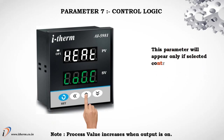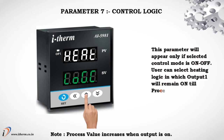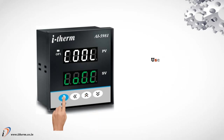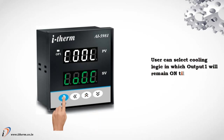Parameter 7: Control Logic. This parameter will appear only if the selected Control Mode is on-off. The user can select heating logic, in which output 1 will remain on while the process value is less than the set point, or cooling logic, in which output 1 will remain on while the process value is greater than the set point.